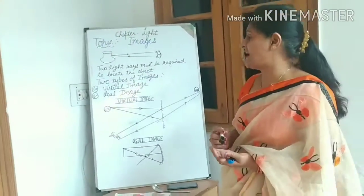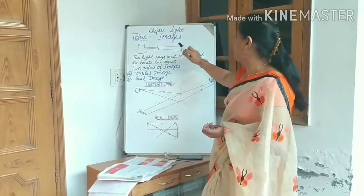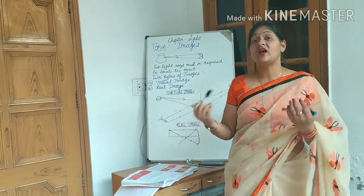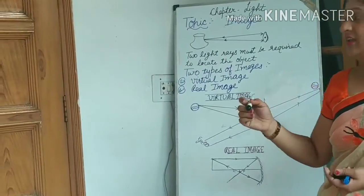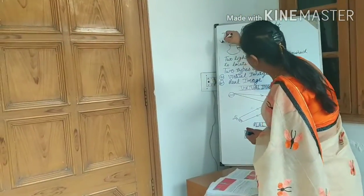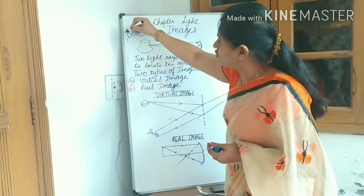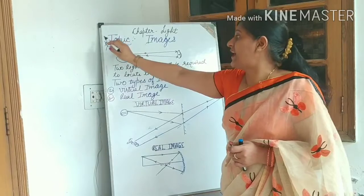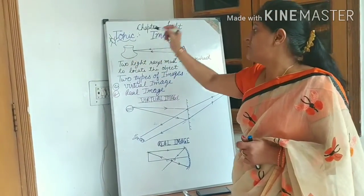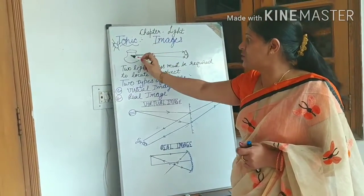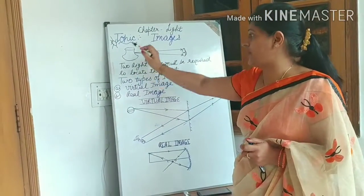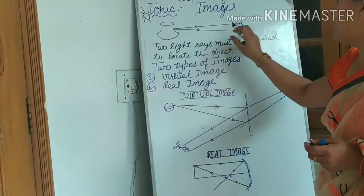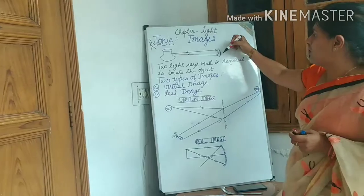Now what happens actually? Light is reflected from the pot. But the pot is a non-luminous object — it is not producing its own light. Then how is light reflecting from it? We have to consider a light source. The light from this source is falling on this object, and this object is reflecting light from all its points. Here we will consider two rays of light. These two rays of light are falling on our eyes.